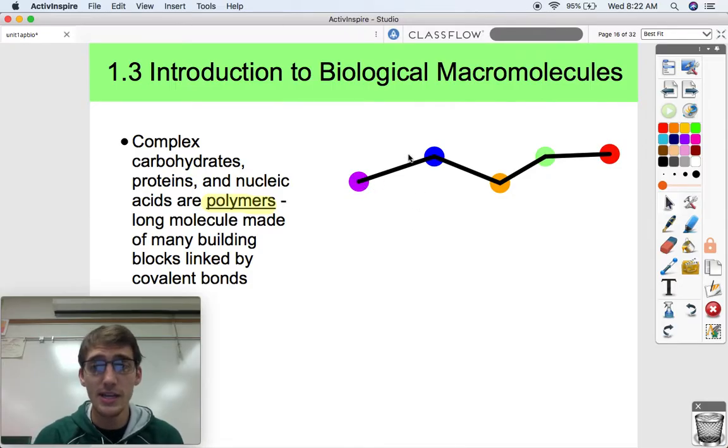So let's just say, check this out. This is a protein, or the start of a protein. This is a primary level protein. We have a chain of five different amino acids here. That is by definition a polymer.